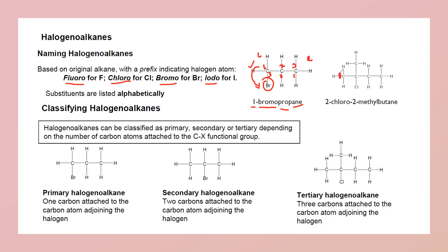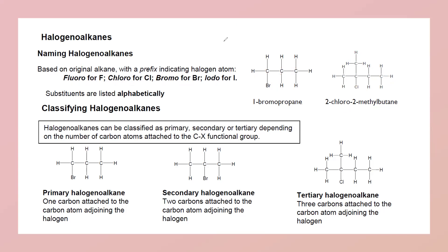If we have both a branch and a halogen, we select the longest carbon chain and number from the nearest branch or functional group. For example, with four carbons, if methyl and chlorine are both at position two, we name branches in alphabetical order: 2-chloro comes before 2-methyl. With four carbons and a single bond, it is 2-chloro-2-methylbutane.